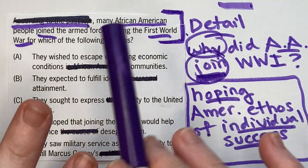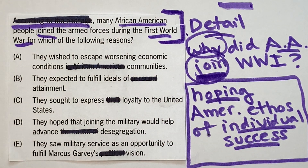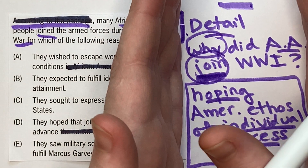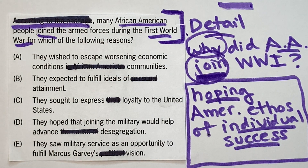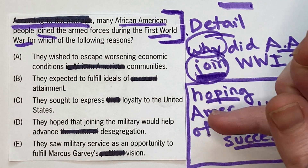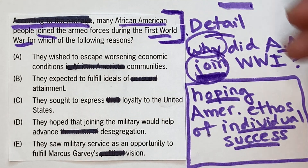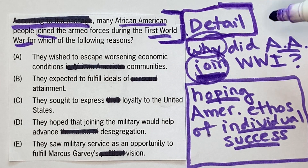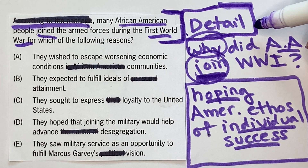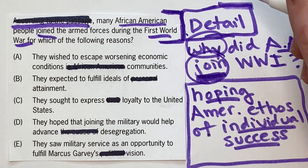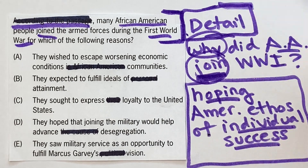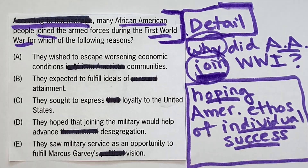When taking the test, you won't be able to write on the question itself, but you will have scratch paper. For each reading comp question, I recommend giving yourself three places to do three very important steps. The first thing you want to do is identify the question type. There are four reading comp question types — at least how I classify them: main idea, detail, function, and inference. Understanding the question type helps you recognize the wrong answer traps associated with each type.